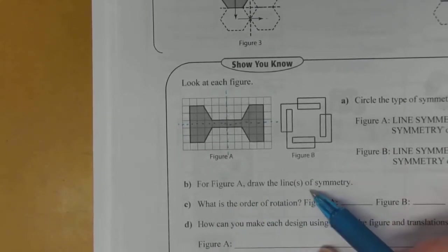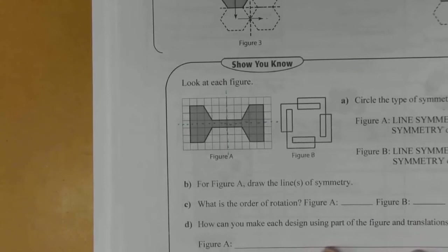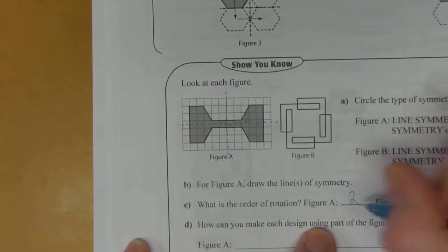For figure A, draw the lines of symmetry. Well, I already got that done. Order of symmetry for A, we said was two.